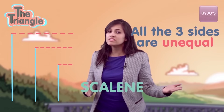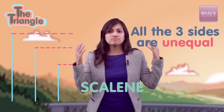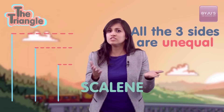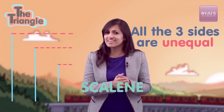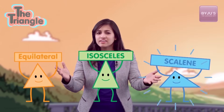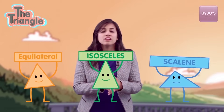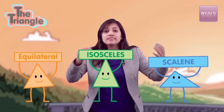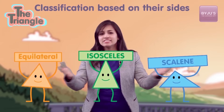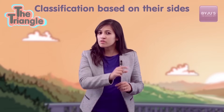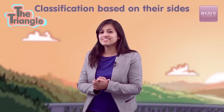In a scalene triangle, all three sides are unequal. Due to that inequality, any side can be considered as a base, and legs aren't really relevant here because legs need to be equal to each other. So equilateral, isosceles, and scalene are the three types of triangles categorized based on the length of their sides.